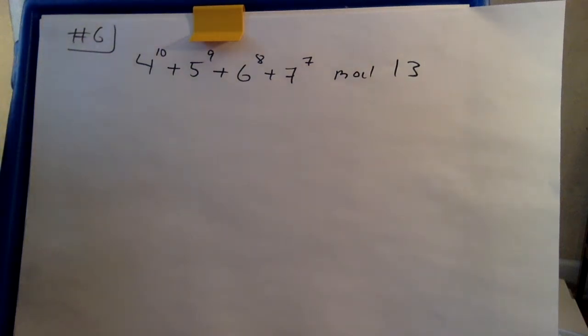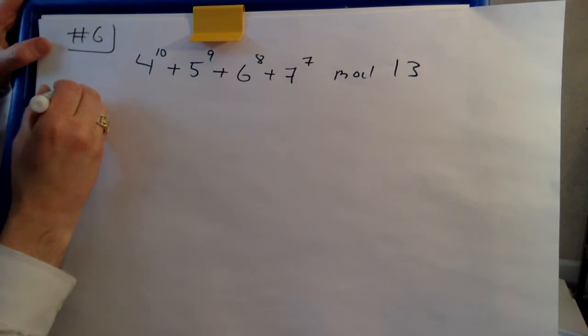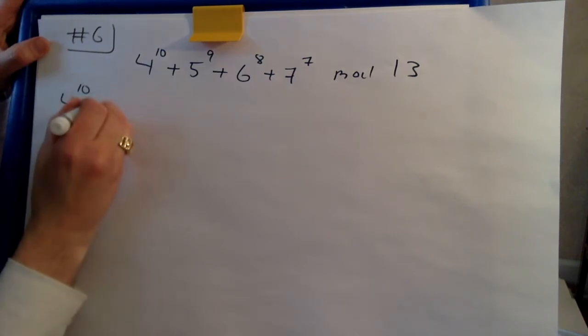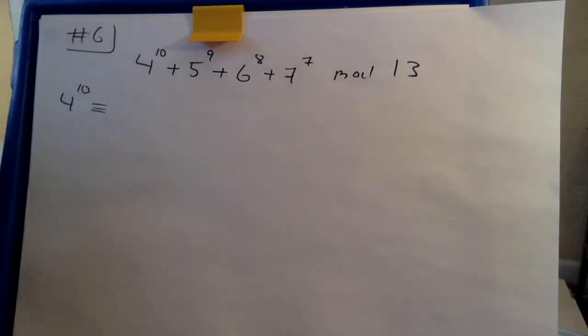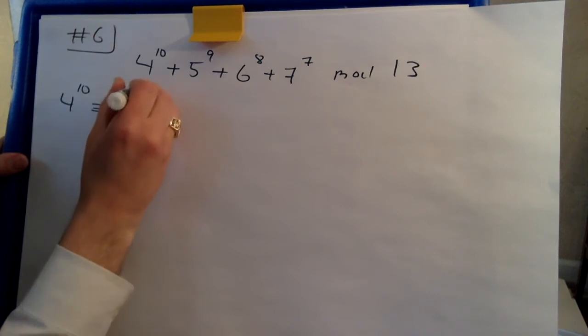Okay, compute this thing minus 13. Well, let's begin. 4 to the 10. Instead of multiplying things out here we can say well 4 is 2 squared so this is then 2 to the 20.